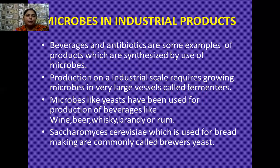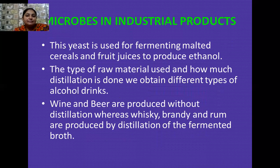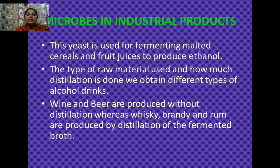Various types of alcoholic beverages such as wine, beer, whiskey, brandy, and rum are produced with the help of the unicellular fungus yeast, Saccharomyces cerevisiae, which is also used for making bread and is commonly called brewer's yeast. In industries, this yeast is used for fermenting malted cereals and fruit juices to produce ethanol. Wine and beer are produced without distillation, while whiskey, brandy, and rum are produced by further distillation of fermented fruit, making their effect stronger.